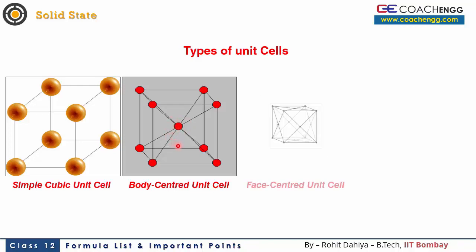The element located at the face-centered unit cell is also placed in the cube. The cube has 6 faces, and at the center of each face there is an atom, in addition to atoms at all 8 corners. The adjacent corners also form the face-centered unit cell.